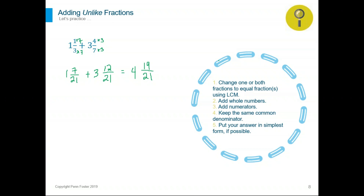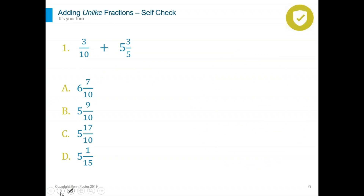In those bubbles in my slides, I listed the order of steps needed to perform each operation. You're welcome to write them down in your notes. This is a self-check — I mentioned we will practice some problems. If you are watching this webinar as a recording, pause it, do the problems yourself, and then replay to check your answer. We're adding three tenths plus five and three over five. We have different denominators — unlike fractions. What LCD do we need to perform the addition?